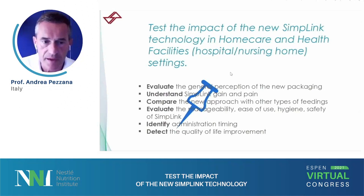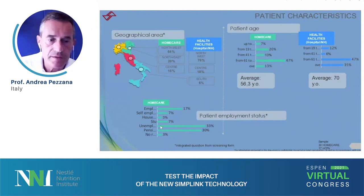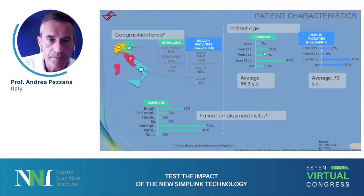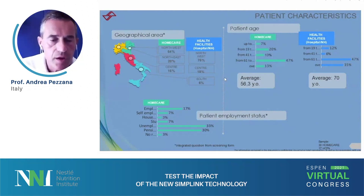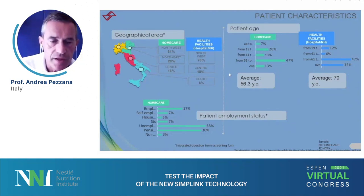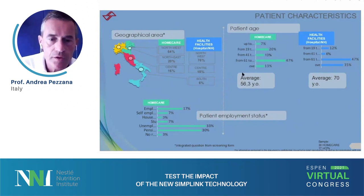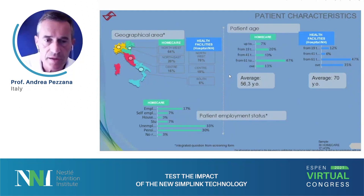About 50 patients have been evaluated in this first study. We only had experience in home care settings, and the patients who are appreciating this most — who have very high levels of satisfaction — are those who already used bolus feeding with other, less comfortable types of administration. They had to use glasses, they had to use a syringe, and had to pay a lot of attention to reduce the risk of hygiene contamination. This closed system is absolutely helping them.